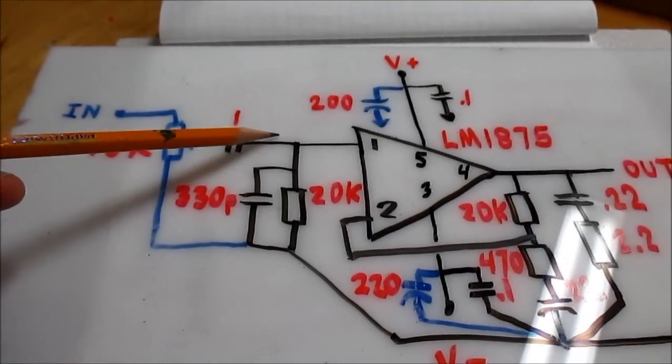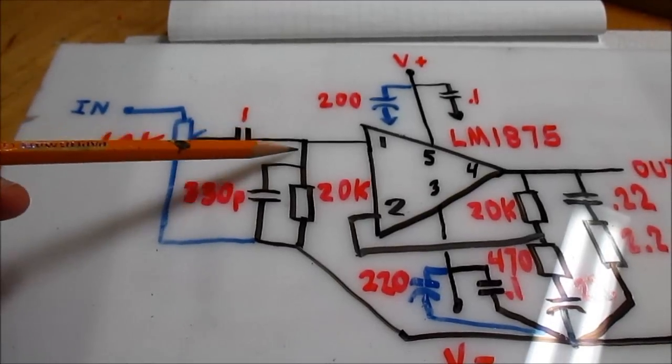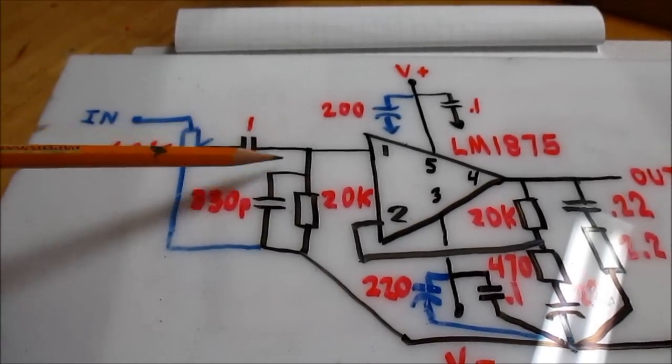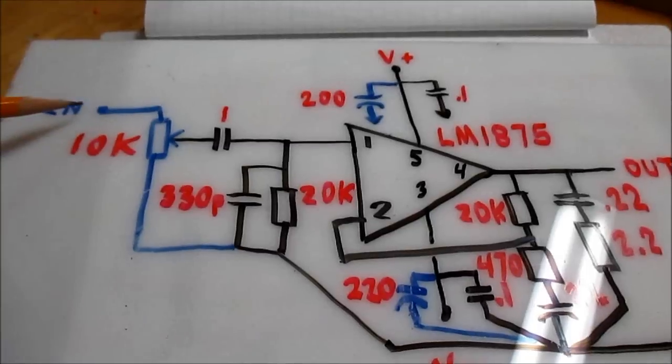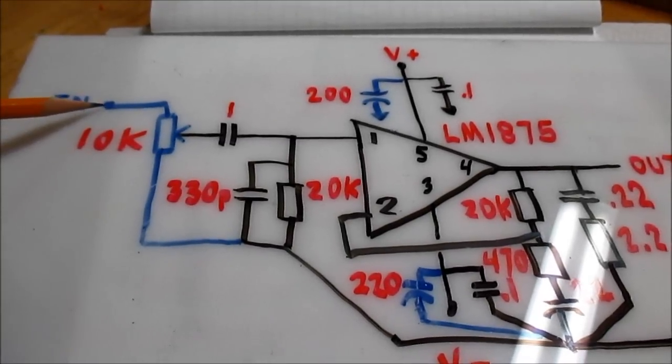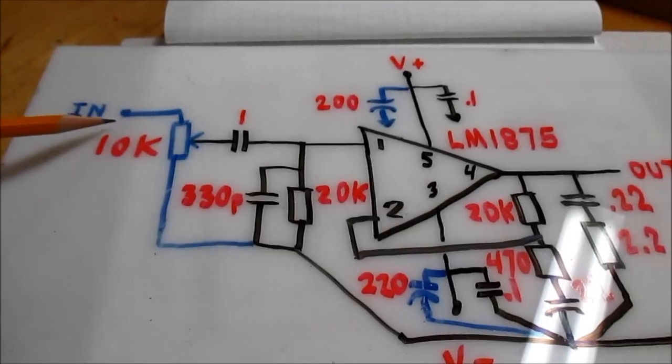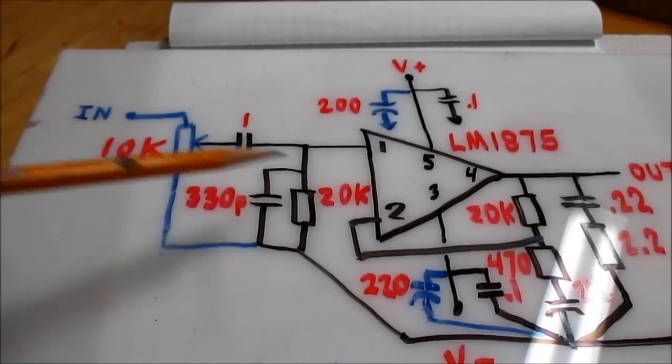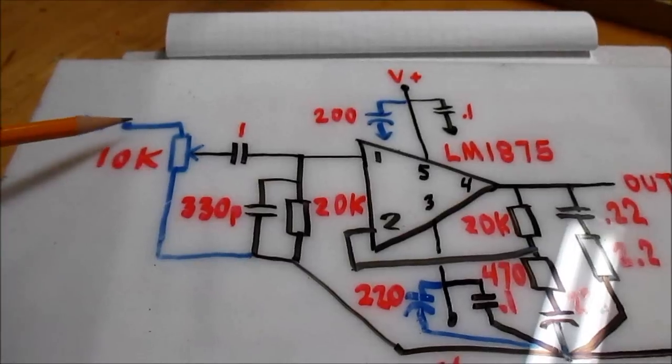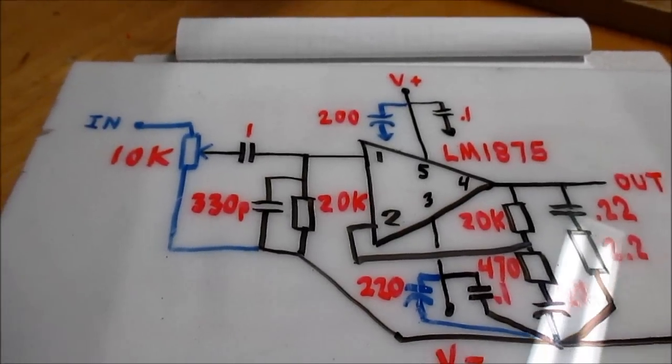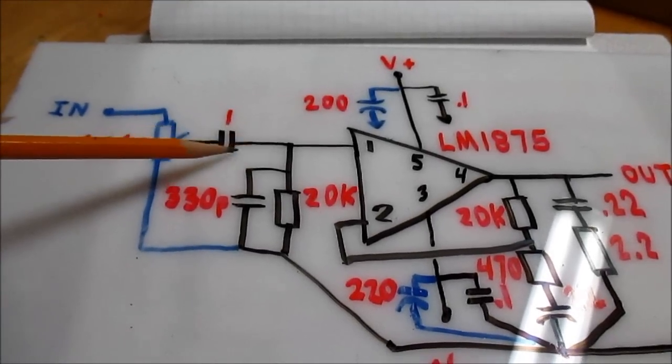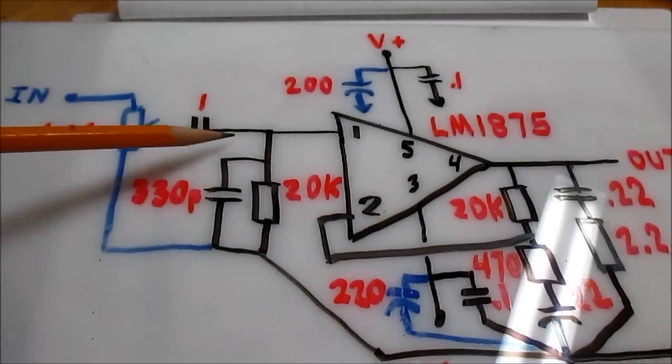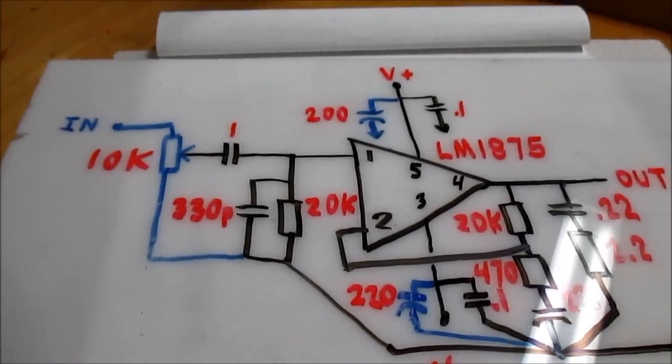And some people might say, where's the series resistor that goes with it to make a proper filter? Well, I don't think you really need it, because in my case, I'm just getting rid of high frequencies that are picked up from the output when there's nothing plugged in. So, that's why I'm doing that. If you want to add like a 1K resistor or a 2.2K or something like that, sure, go ahead.